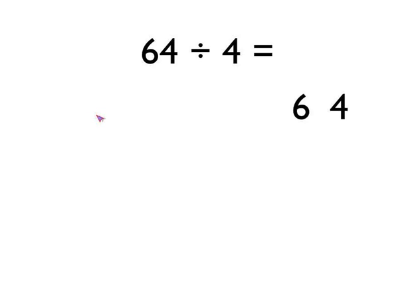Let's have a look at a first example. We're going to do 64 divided by 4. Using the chunking method, you've got to get into the habit of asking yourself the question: how many 4s go into 64? Or, 4 times what is 64? Or another way to think of it is, how many times would I have to add 4 together to get 64?